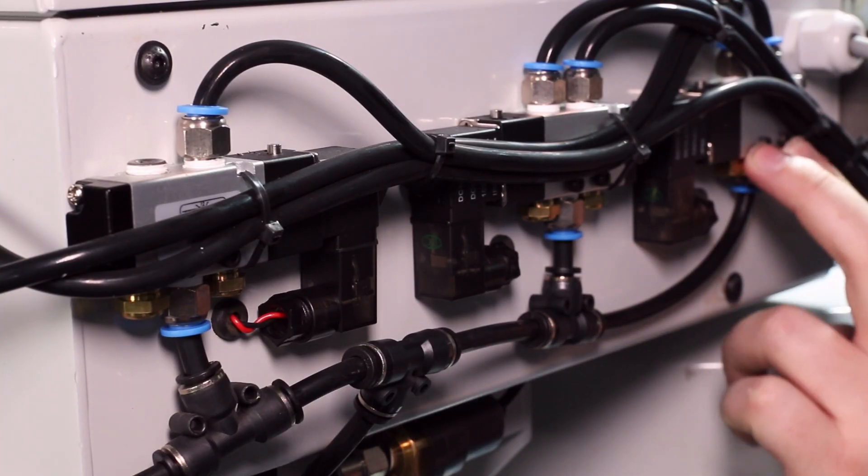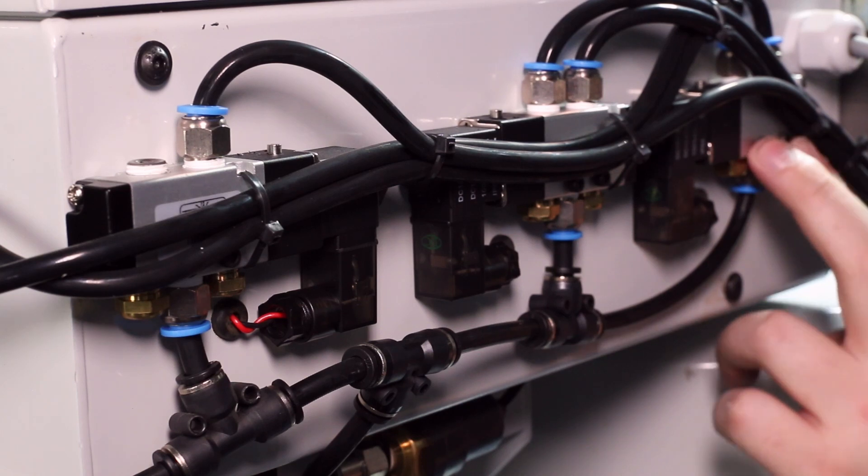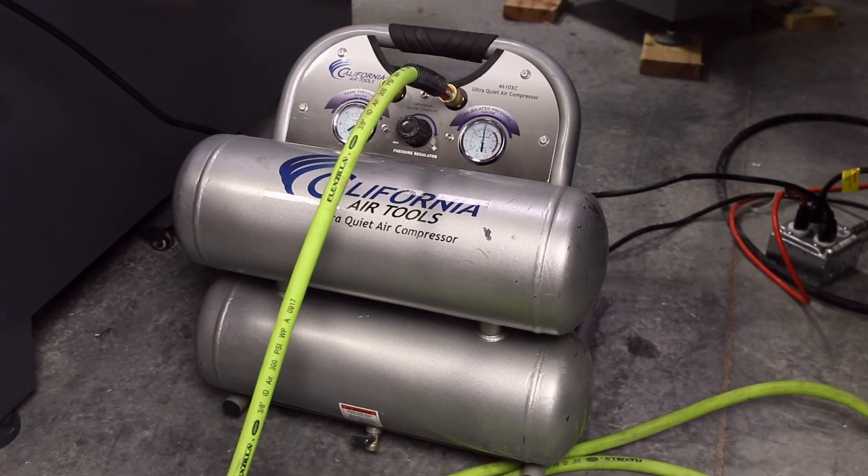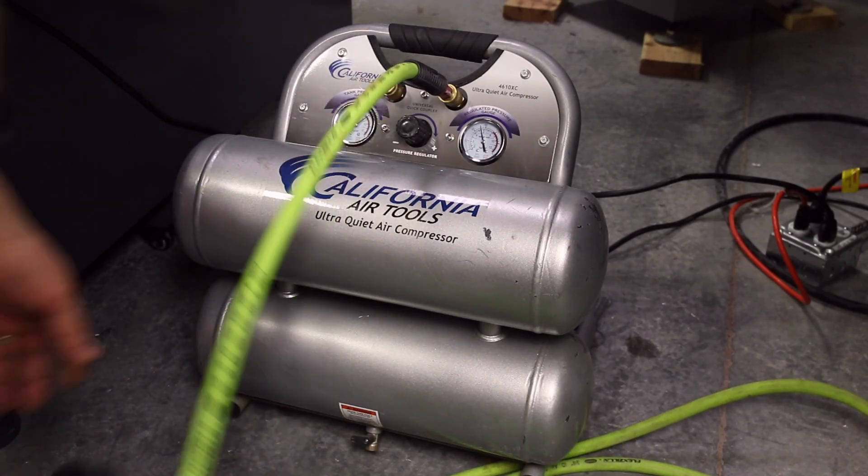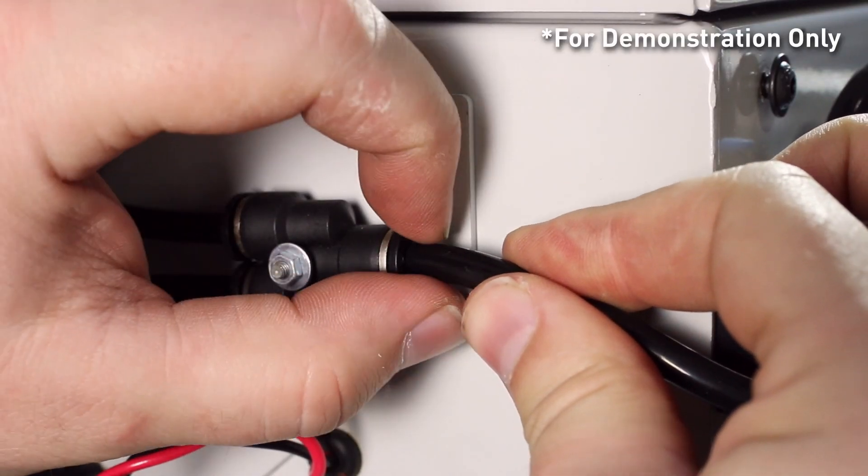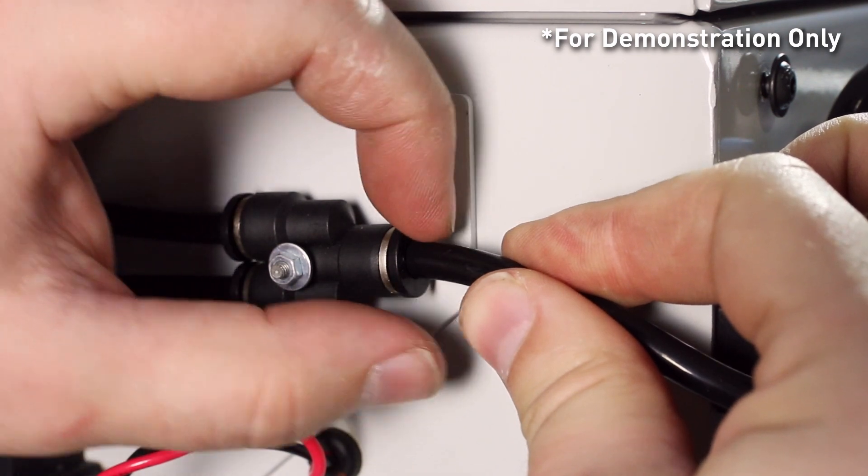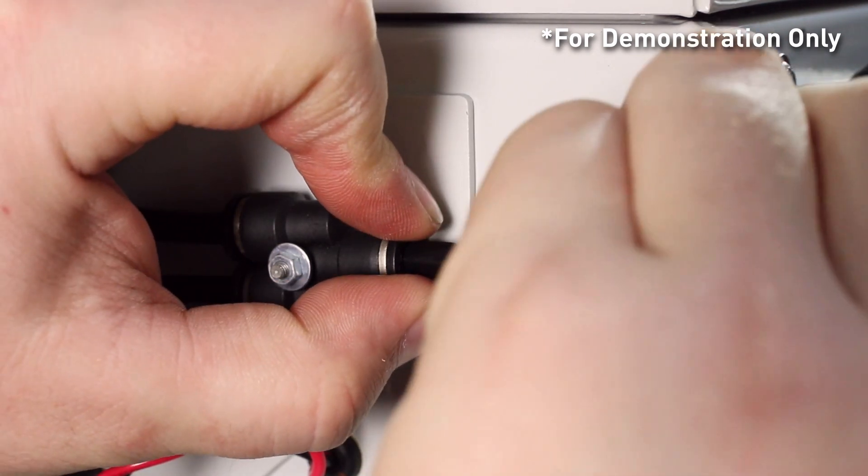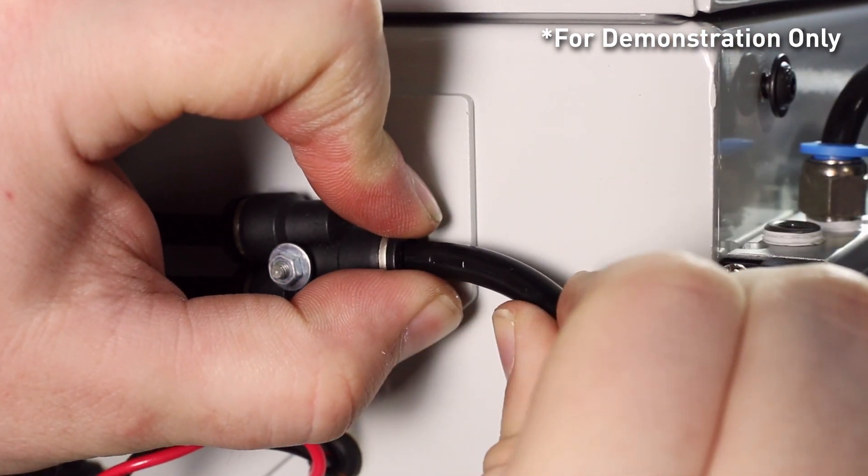To remove the solenoids, remove the two screws and disconnect the airlines. To remove the airlines, the air compressor has to be off and the air bled from the machine. Then use two fingers to push the retention ring in while also pushing in the airline towards the fitting. Then pull the airline out.